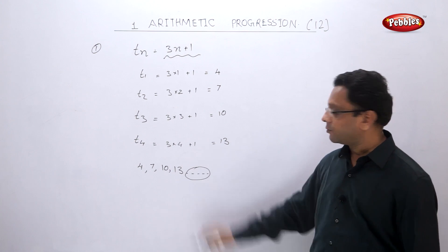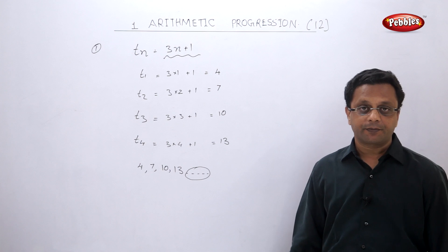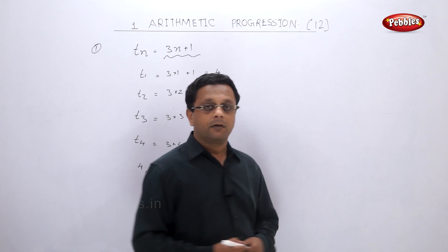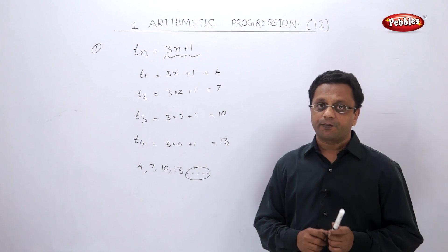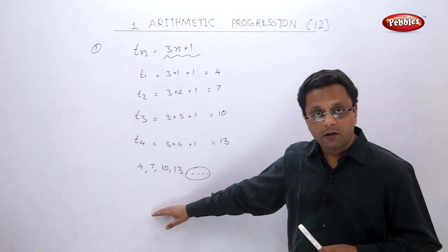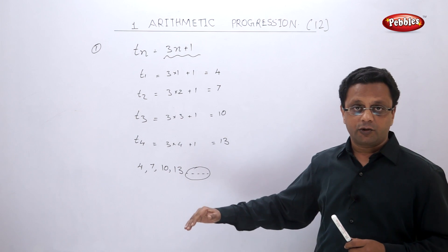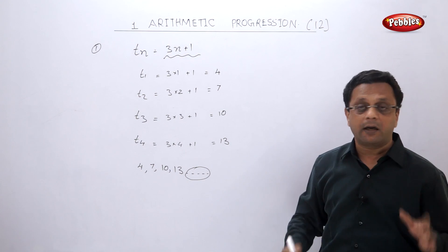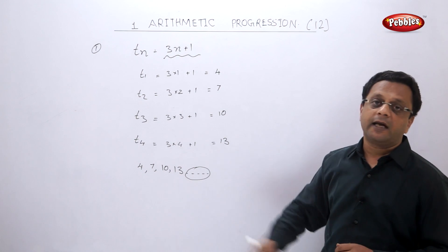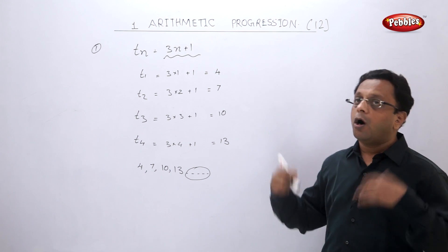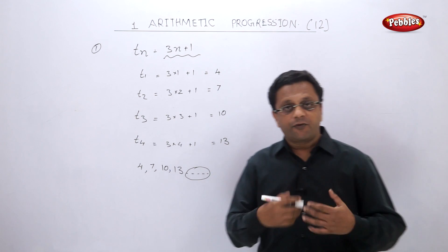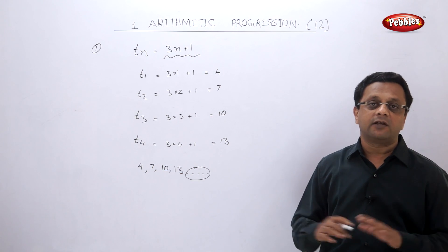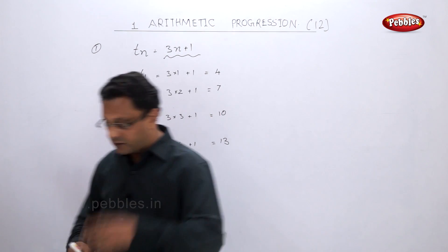Since they asked only for the first 4 terms, your answer will be: the first 4 terms of the sequence denoted by Tn = 3n + 1 are 4, 7, 10, and 13. Sequence and arithmetic progressions are very simple — do not keep it as an option. This type of question can be there for 2 marks.